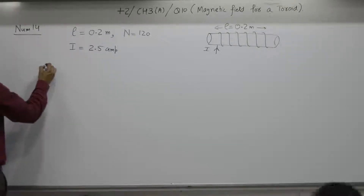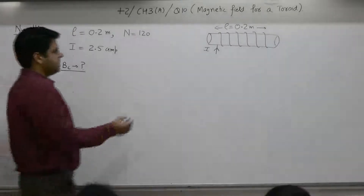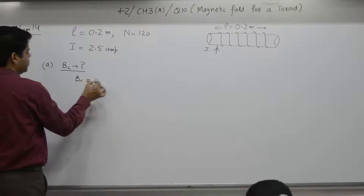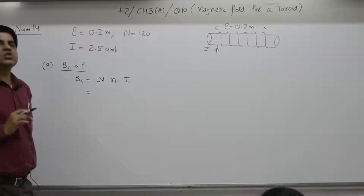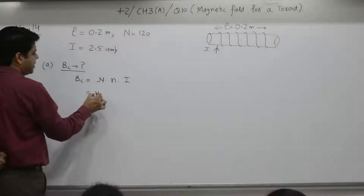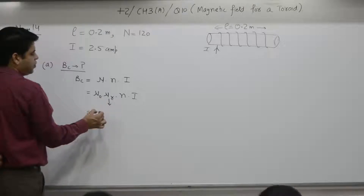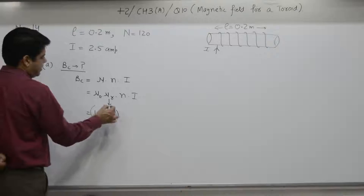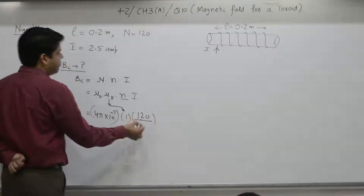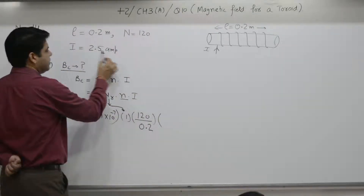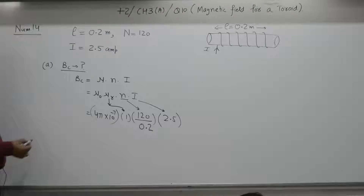First part: B at center. The formula for magnetic field at the center is B = μnI. The material is not specified, so assume air. B = μ₀ × μr × n × I, where μ₀ = 4π × 10⁻⁷, μr = 1. Small n represents number of turns per unit length; length is 0.2 meter, current I = 2.5 ampere. Solve and find the answer.